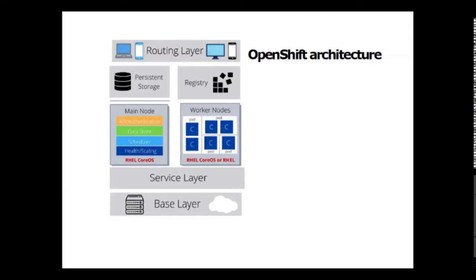The registry is where you save your images locally in the cluster. Persistent storage is where all application data is saved and connected to containers. The routing layer provides external access to applications in the cluster from any device, and also provides load balancing and auto-routing around unhealthy pods. These are the main components of the OpenShift Container Platform.